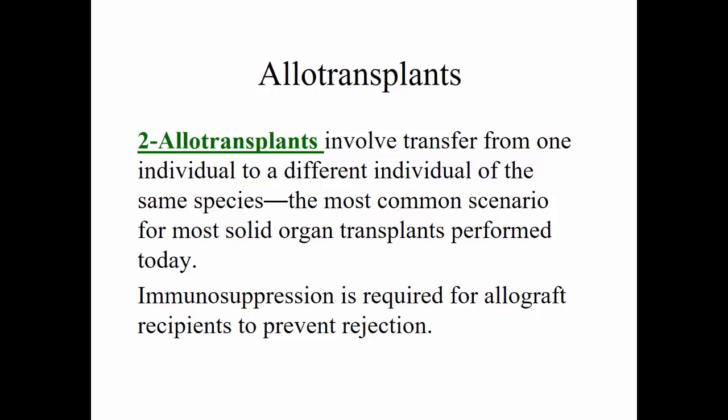The autograft would not be presented to the adaptive immune system for possible rejection and creation of antibodies. Allotransplants involve transfer from one individual to a different individual but from the same species — meaning human to human. The most common scenario would be transplanting a liver, heart, lung, or kidney. Because of the genetic differences, immunosuppression is required since there is always a minimum percentage of graft-versus-host rejection.